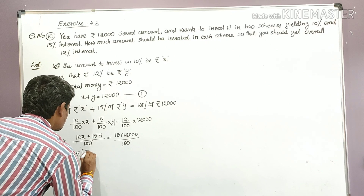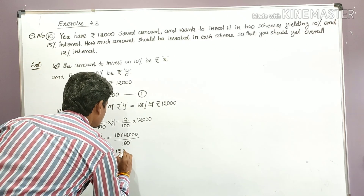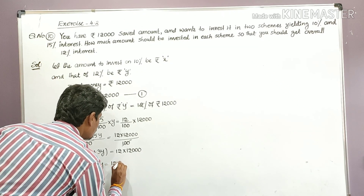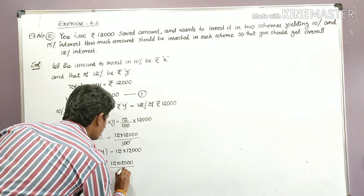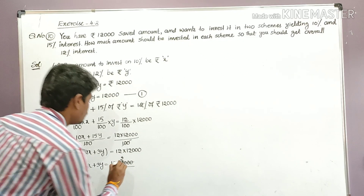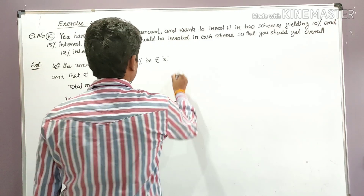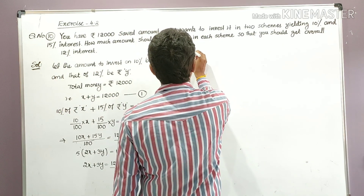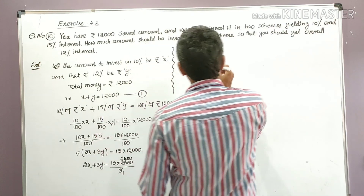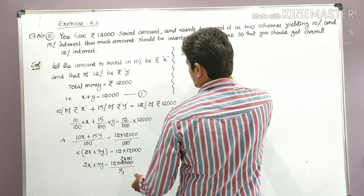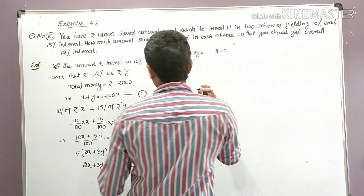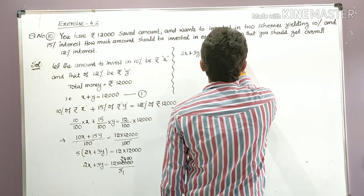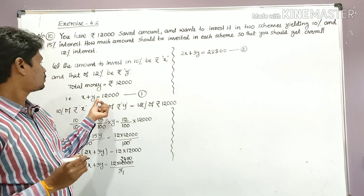Taking 5 as common from 10x and 15y, we get 2x plus 3y. On the right side, 12 into 12,000 divided by 5 gives us 28,800. So Equation 2 becomes: 2x plus 3y is equal to 28,800. Now we have to solve Equations 1 and 2.